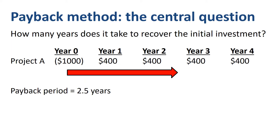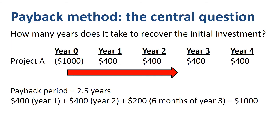It's fairly easy to calculate that the payback period is 2 and a half years. $400 of benefits in year 1, plus $400 of benefits in year 2, plus 6 months' worth of benefits in year 3, making up the final $200, at which point the total investment equals the total benefits.